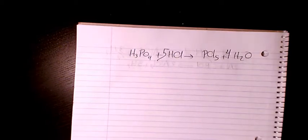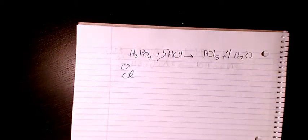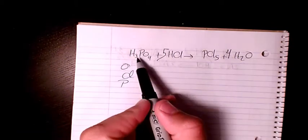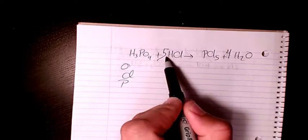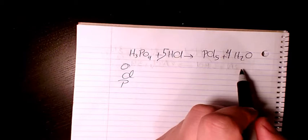So oxygen is balanced, chlorine is balanced, phosphorus is balanced. The only thing remaining is hydrogen. Hydrogen, we have three plus five, it's gonna be eight. And here we have four times two, eight. So that's balanced.